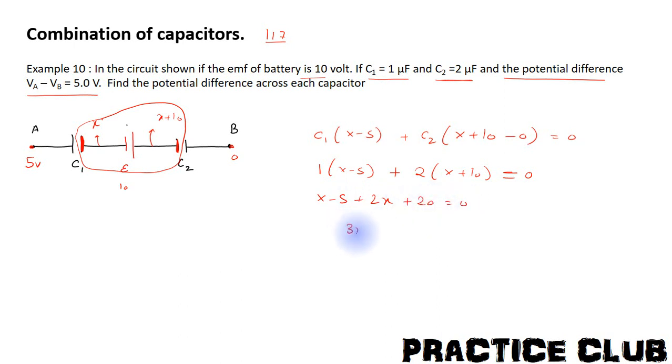And therefore, X will become equal to minus 15 and therefore, X will be equal to minus 5V.